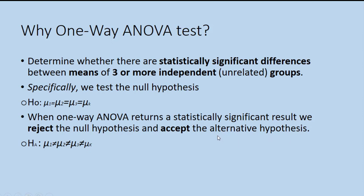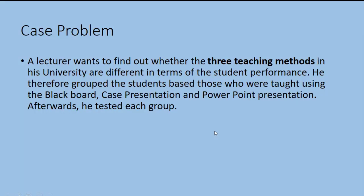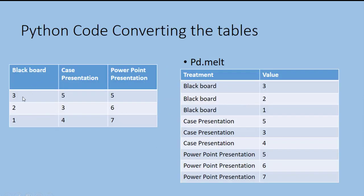To understand this, we'll walk through a case problem. We want to find out whether three teaching methods at a university differ in terms of student performance. Students were grouped based on whether they were taught using the blackboard, case presentation, or PowerPoint presentation, then given a test. The scores for the blackboard method are 3, 2, 1; for case presentation 5, 3, 4; and for PowerPoint 5, 6, 7. To work with this in Python we need to convert this table into a two-column table.